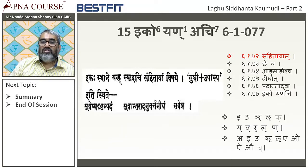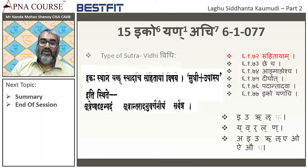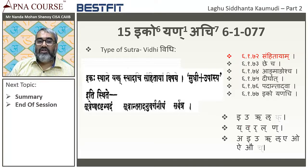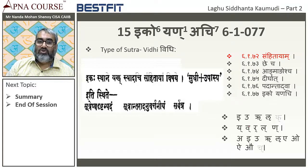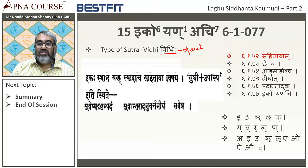Now we come to the first Sandhi which is part of Aj Sandhi — this is the 15th Sutra. The first fourteen Sutras were covered in part one. To dissect a Sutra, first we find its type. Ikaryon Achi is a typical Vidi Sutra — Vidi is operational. We have seen the six types of Sutras earlier: Vidi, Niyama, Atidesha, Adhikara, and Sanya Sutram.